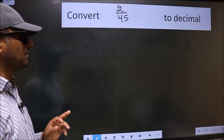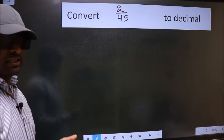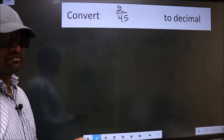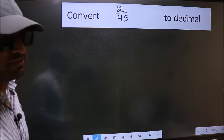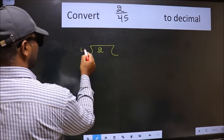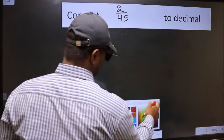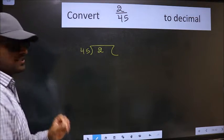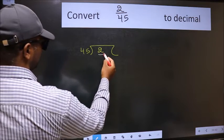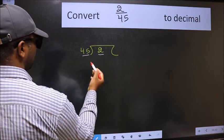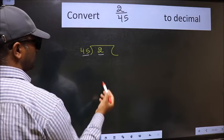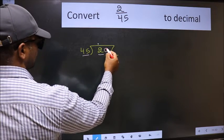Convert 2/45 to decimal. To convert to decimal, we have to divide, and to divide we should frame it in this way: 2 here, 45 here. This is step 1. Next, here we have 2 and here 45. 2 is smaller than 45, so we should put a dot and take zero.